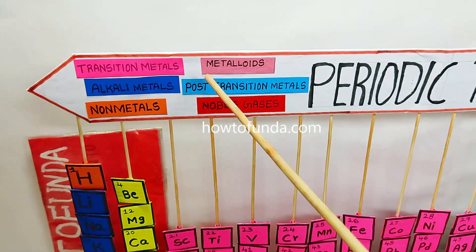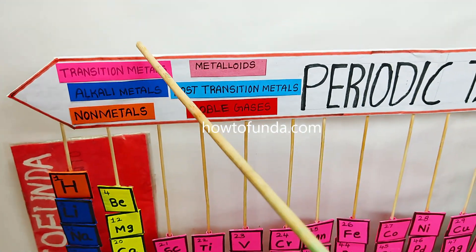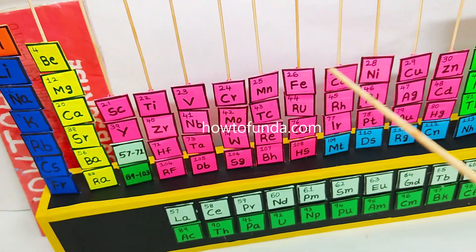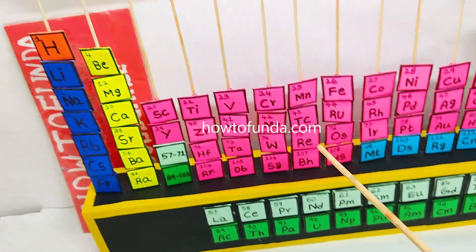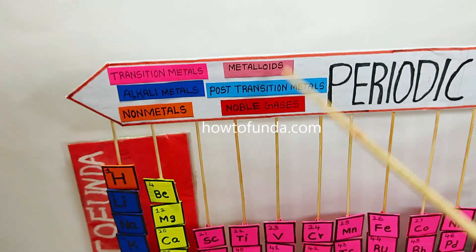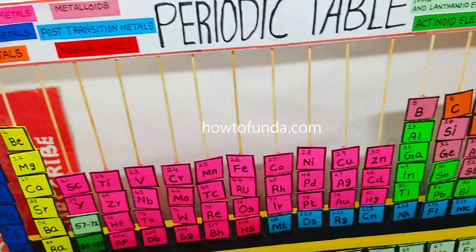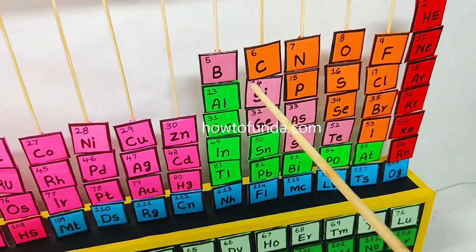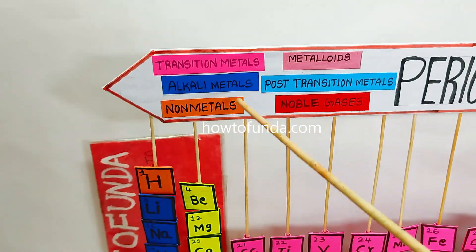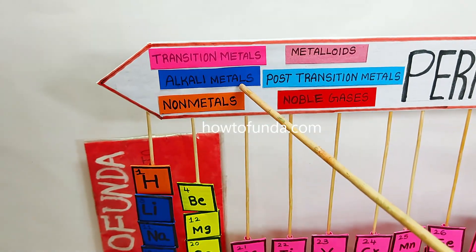If you can see, there are the transition metals. All the transition metal elements were given in pink color. We have grouped all the metalloid chemical elements somewhere here. These are all metalloids, and all the alkali metals are given in dark blue.